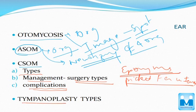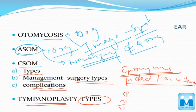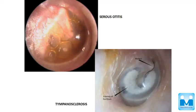The next important topic is tympanoplasty types — myringoplasty types 1, 2, 3 — and in which conditions they are used and what structures are removed in each. Looking at this slide, on the bottom right we have an important image of tympanosclerosis, and on the top left we have an image of serous otitis media. These are two important images in ear that everyone should remember.